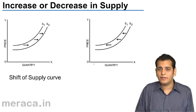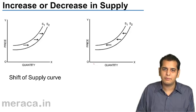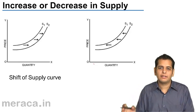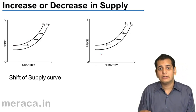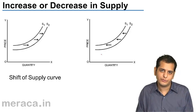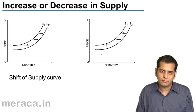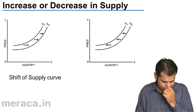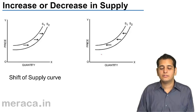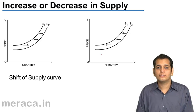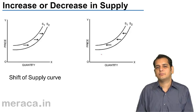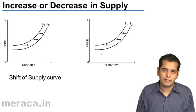Change in supply, or increase or decrease in supply, means the shifting of the supply curve. The supply curve altogether shifts outwards or inwards as the case may be. Now, why does this supply curve shift? The supply curve shifts because there is a change in some factor of supply — some factor which determines supply.